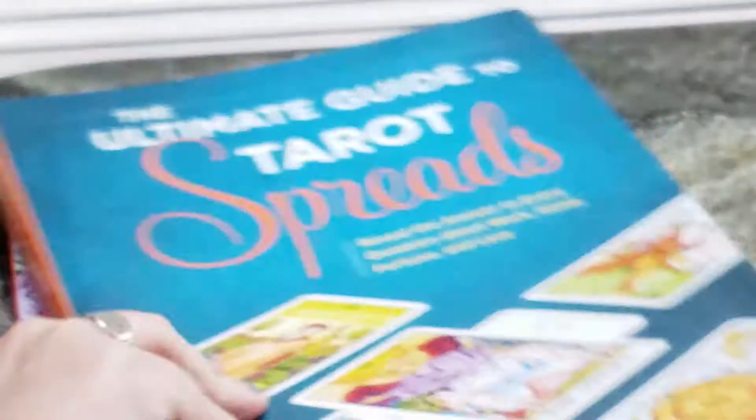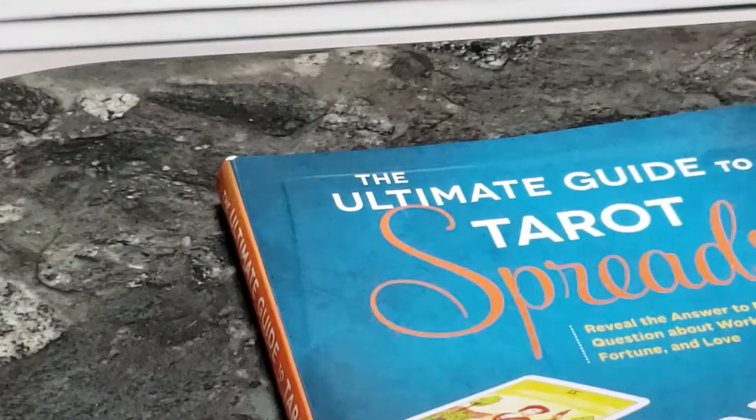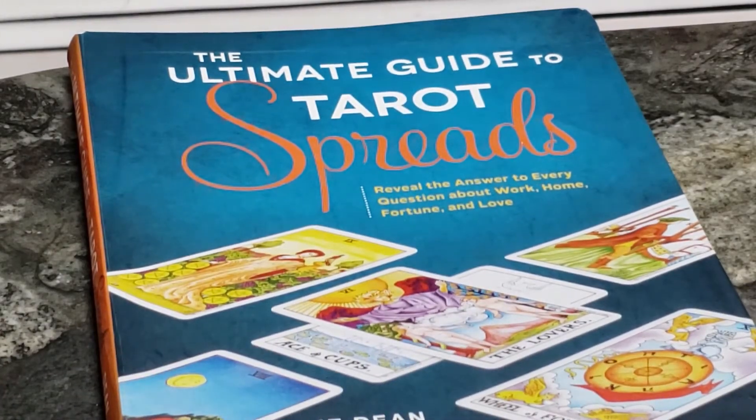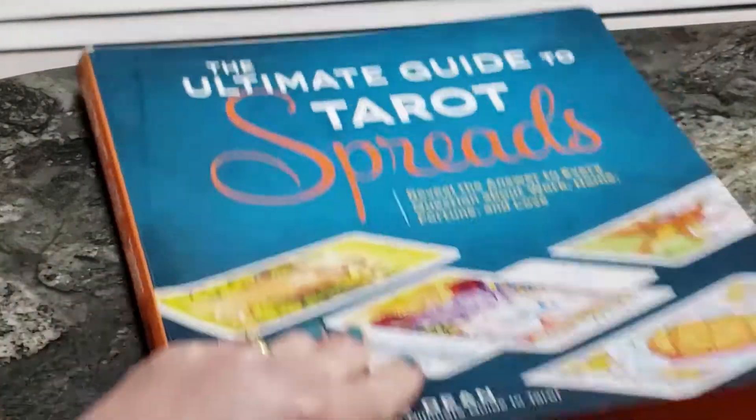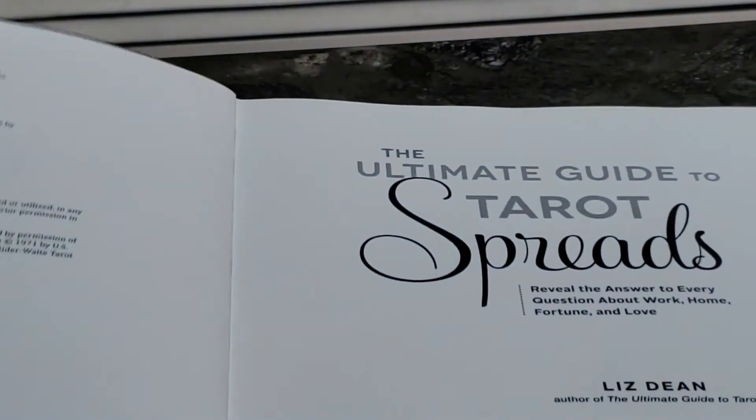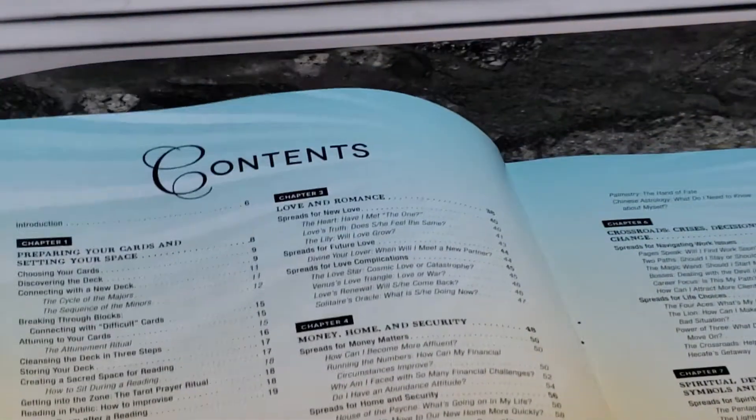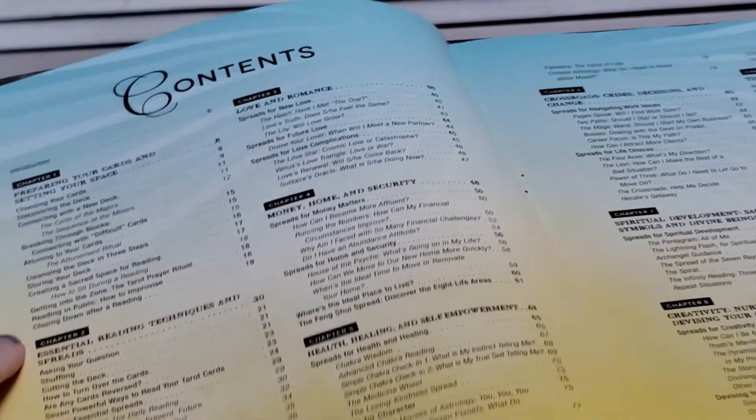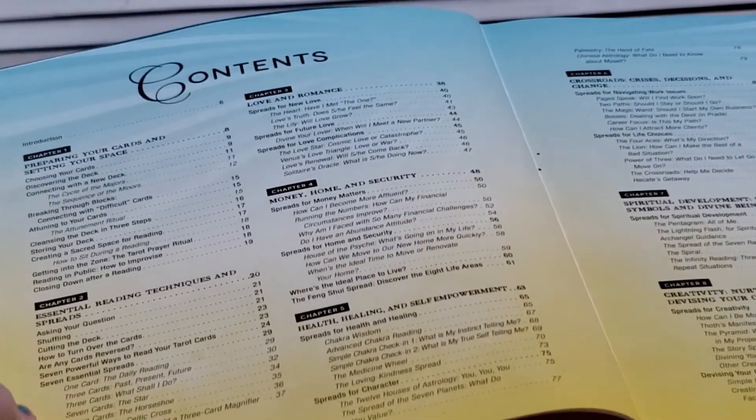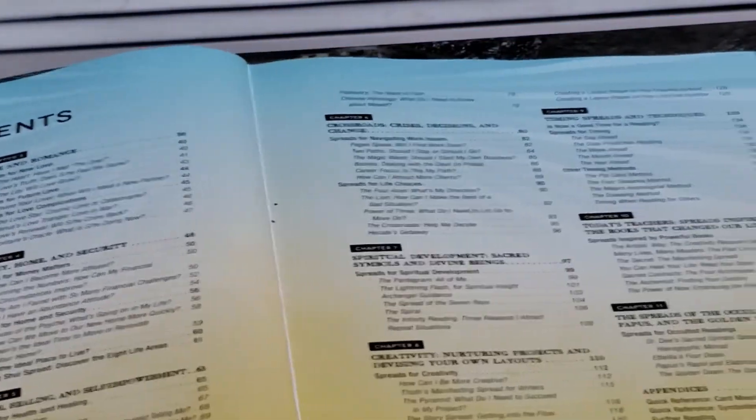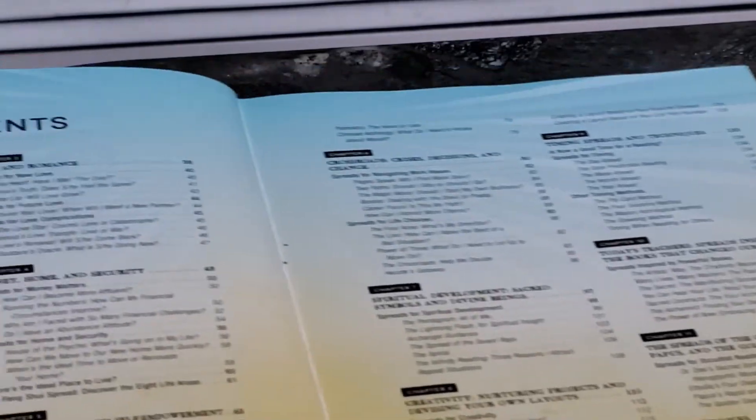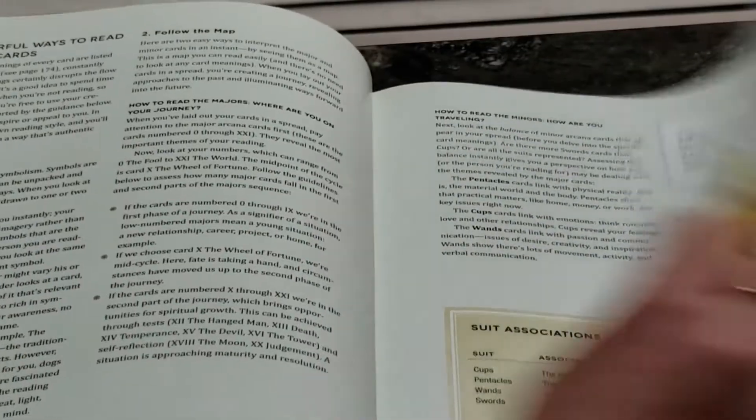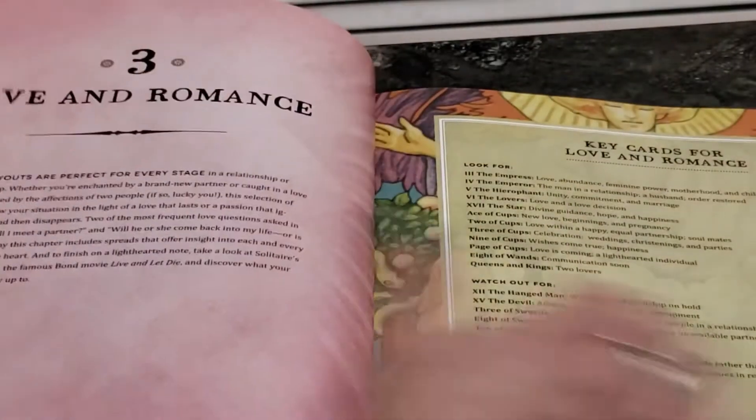And then the next book, which pairs right with it. And I rarely use this book. But I figured I should share it because it is a good one. It's by the same author, Liz Dean. It's the ultimate guide to tarot spreads. It was also given to me. And this entire table of contents is spreads. This just talks about setting up your space and cleansing your decks. This one talks about essential reading techniques. And then everything else that you see here are different kinds of tarot spreads. Okay. So the first two chapters are about cleansing. And then after that, every single page is about spreads.